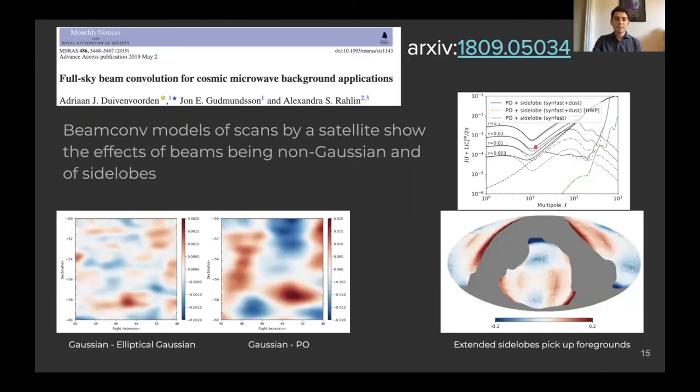The first BeamConv paper focused on the difference that it made if you included physical optics models compared to if you estimated that your beam was just an elliptical Gaussian or a Gaussian. And this is what you can see in that plot at the bottom, the difference between a scan made with a Gaussian beam and, alternatively, an elliptical Gaussian beam or physical optics beam. And you see that the Gaussian approximation fits an elliptical Gaussian will have less difference with an elliptical Gaussian than with a physical optics beam. As we can see, the physical optics has 10 times as many residuals in the map for the physical optics difference map than for the dual Gaussian difference map.